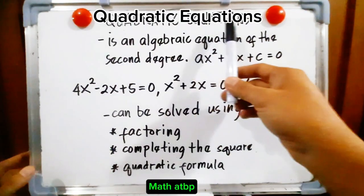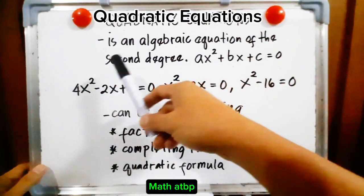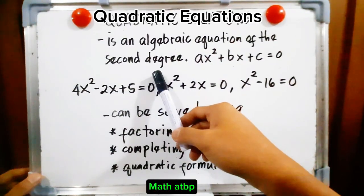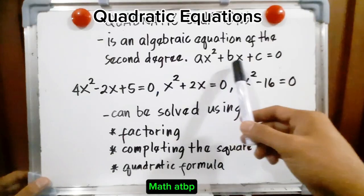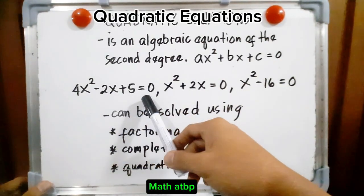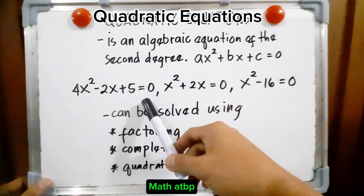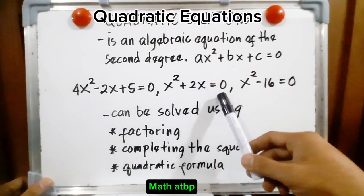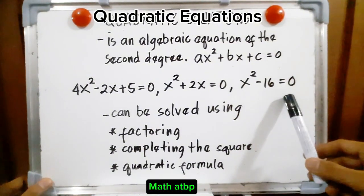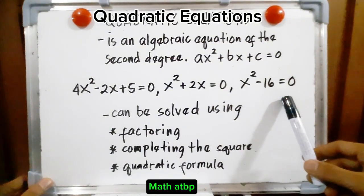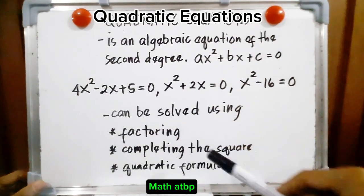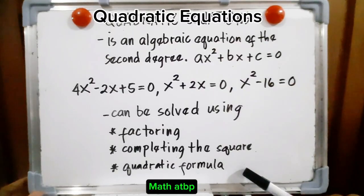Now let us study quadratic equations. What is a quadratic equation? It is an algebraic equation of the second degree, and it is typically written in this form: ax squared plus bx plus c is equal to 0. For example, 4x² - 2x + 5 = 0, x² + 2x = 0, and x² - 16 = 0 are all quadratic equations. Quadratic equations can be solved using factoring, completing the square, and the quadratic formula.